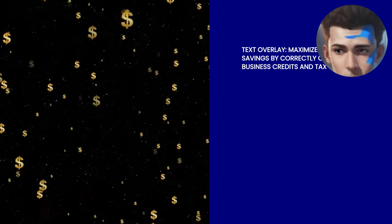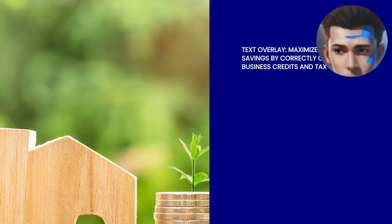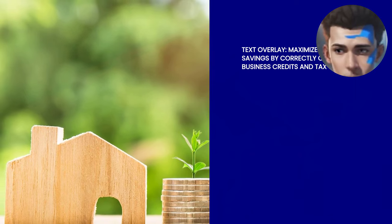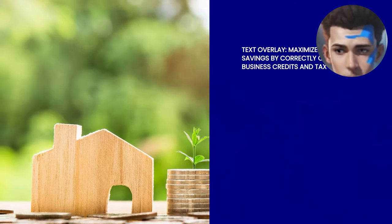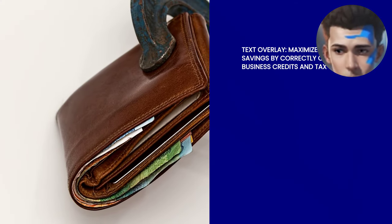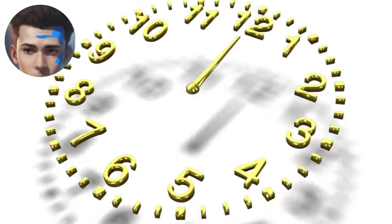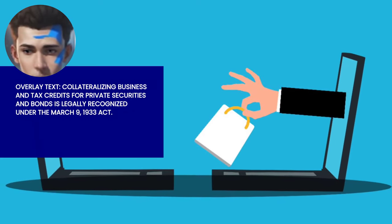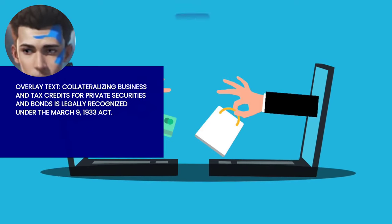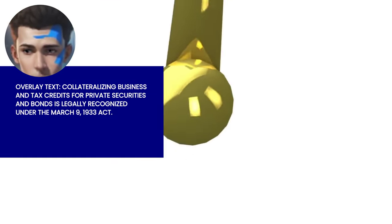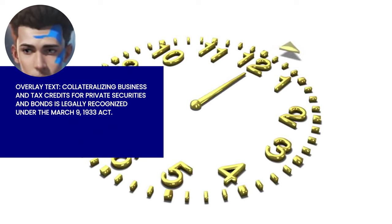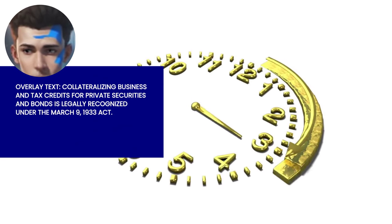And there you have it. We've explored the world of tax credits and business bad debts. Remember, if you're the recipient of business credits and tax credits, you can receive refunds for the taxes you pay during the year by correctly writing off the credits. Lastly, it's important to note that you can use your business credit and tax credit as collateral for private securities and bonds. Under the March 9, 1933 act, eligible papers — which include notes, bonds, and securities — can be collateralized. This has been recognized by courts and legal definitions.